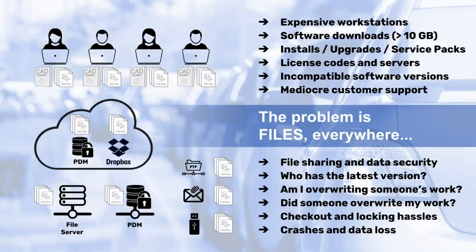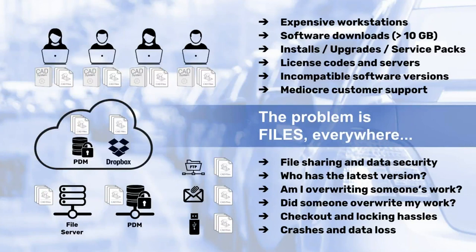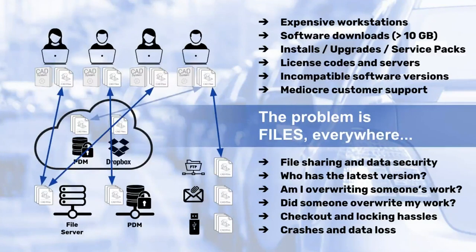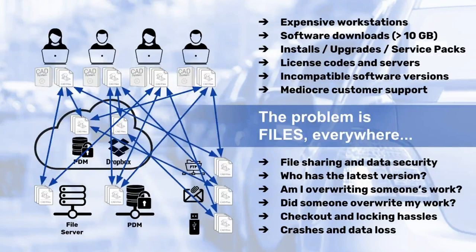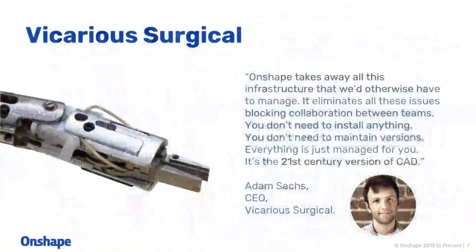You might try to make it easier for distributed teams by putting the PDM system in the cloud or using Dropbox, but the real problem is that there are just files everywhere and nobody knows which are the right ones. PDM alleviates a lot of that, but you're always creating a local copy of the files on your hard drive — which is a security issue. You might use different systems to communicate with different people, internal and external, and suddenly you get complete chaos. If this slide looks like chaos, it's because it is — and it's a fair representation of how file-based 3D CAD systems work today.